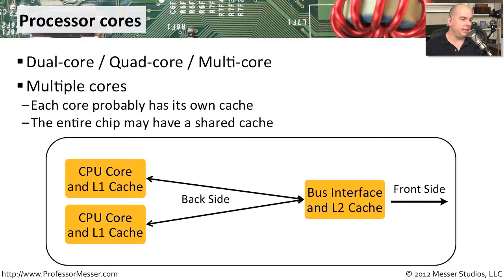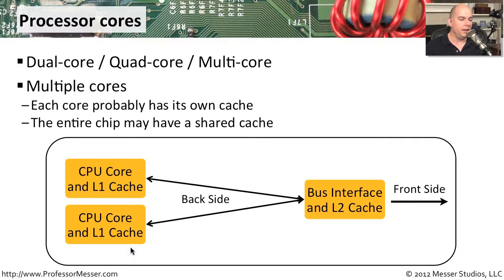You can see an example of this here. You might have one physical chip — a dual core, for instance — which has two separate CPUs inside of it. Each individual core has its own L1 cache inside, and then there might be a shared L2 cache that's outside of the cores themselves.